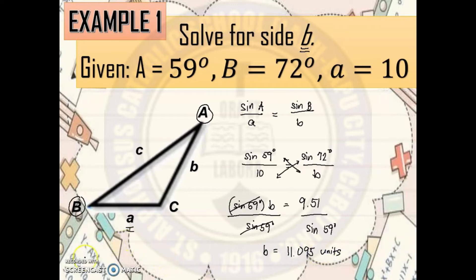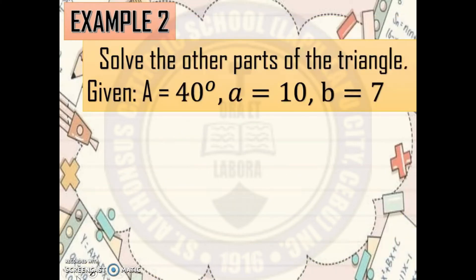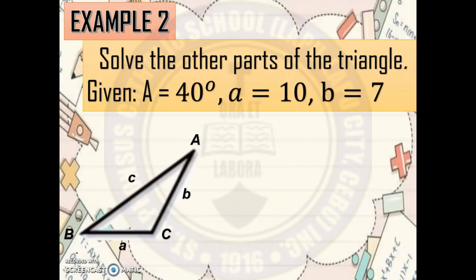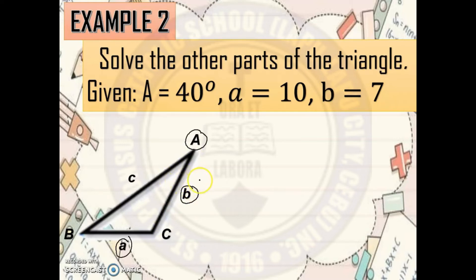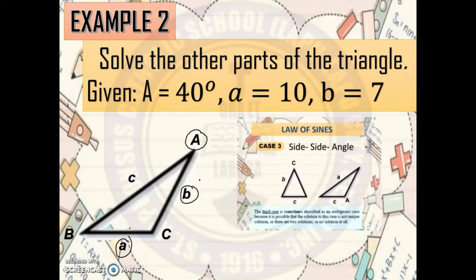Let's proceed to Example 2: Solve the other parts of the triangle. Given: angle A = 40°, side a = 10, and side b = 7. First, illustrate the given and determine what type of case this is. The given is angle A, side a, and side b — two sides and one angle opposite to one of these sides. This is side-side-angle, so this problem is Case 3, and we will use the Law of Sines.